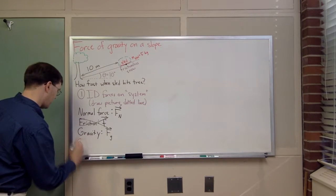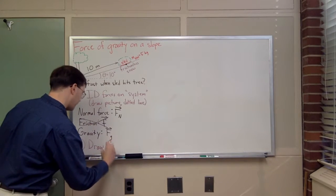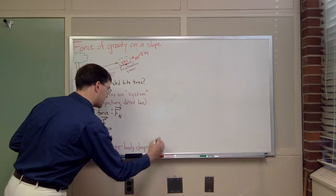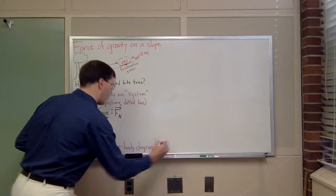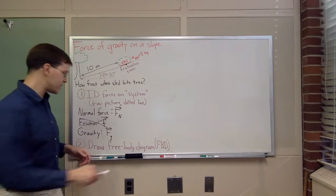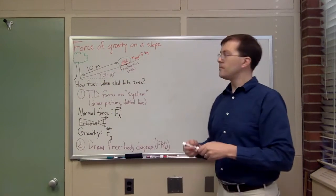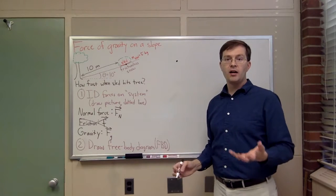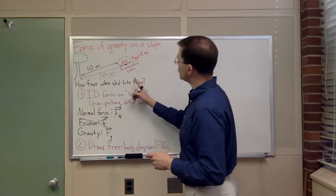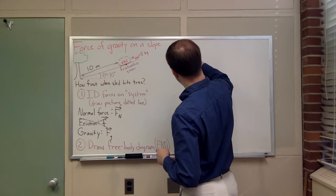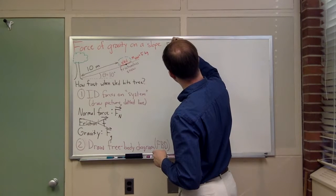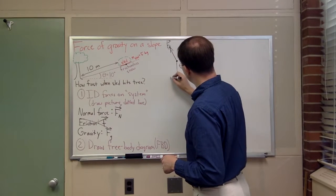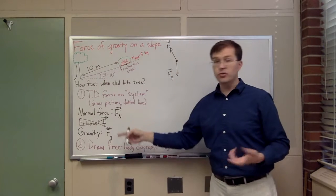Step two is always to draw the free body diagram of the system — physicists abbreviate this FBD. For a free body diagram, I take the list of forces, represent the sled as a single point, and draw the direction for each force. The normal force points perpendicular to the surface, so it's tilted. The gravitational force by definition points straight down. Those are my two forces, so that's my free body diagram.